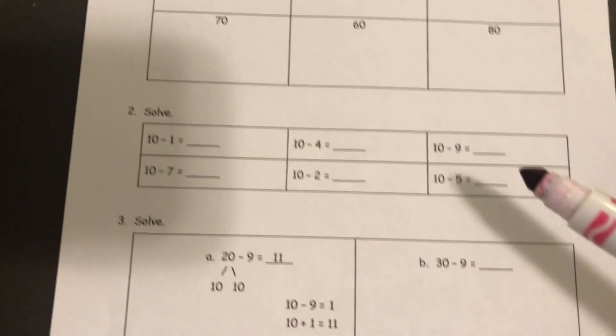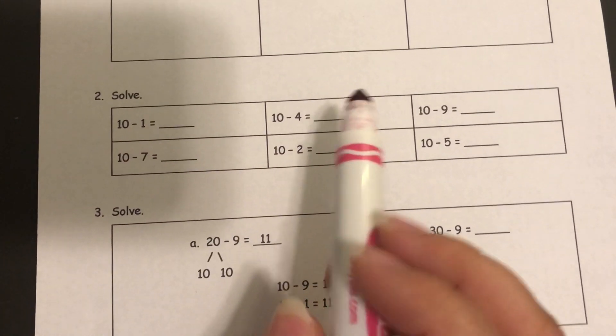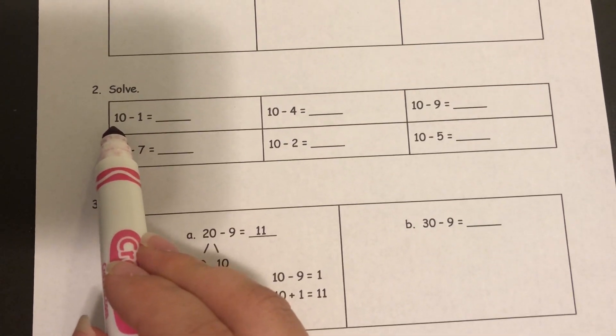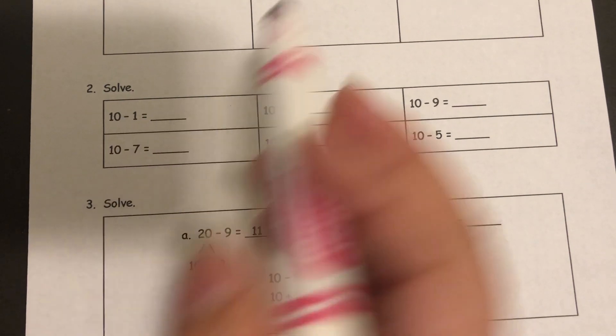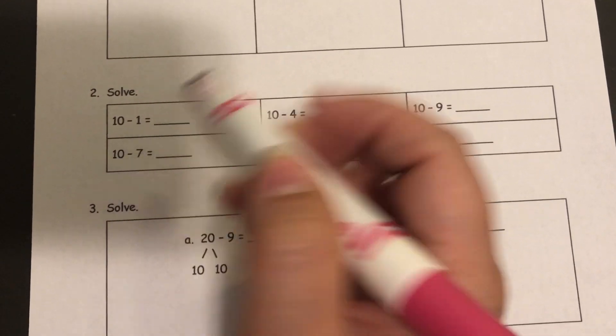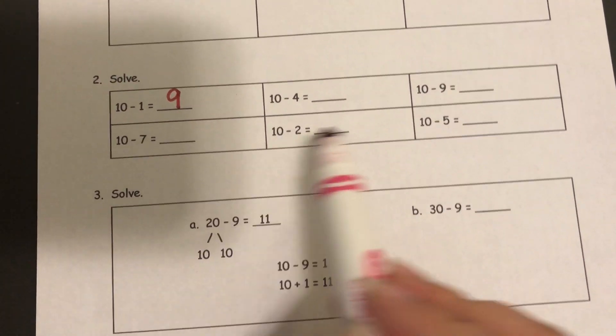And there's another warmup that works on simple subtraction. Each one is gonna start with a 10 and subtract a single-digit number. So 10 minus 1 would give us 9. You'll do those all the same way just with your mental math strategies.